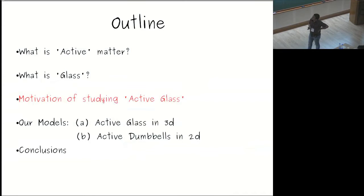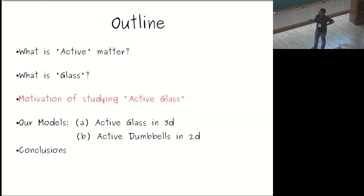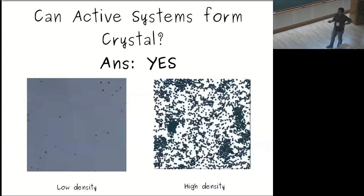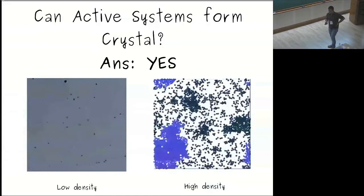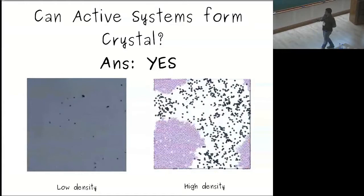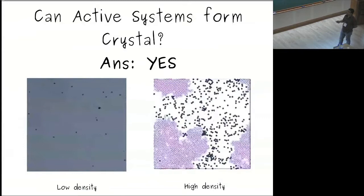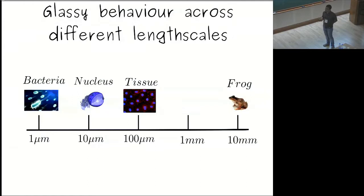We move on to the motivation of our model, active glass. I first talked about active matter, and the obvious question is: does active matter show similar behavior to passive matter? Does it undergo phase transitions? Can the active system form a crystal? The answer is yes — at low density they don't form crystals, at high density they form active or living crystals with interesting behavior. Similarly, one can ask if the active system can form glass, and the answer is again yes. Biological systems across different length scales — from one micrometer bacteria to 10-millimeter frogs — show glass-like behavior.